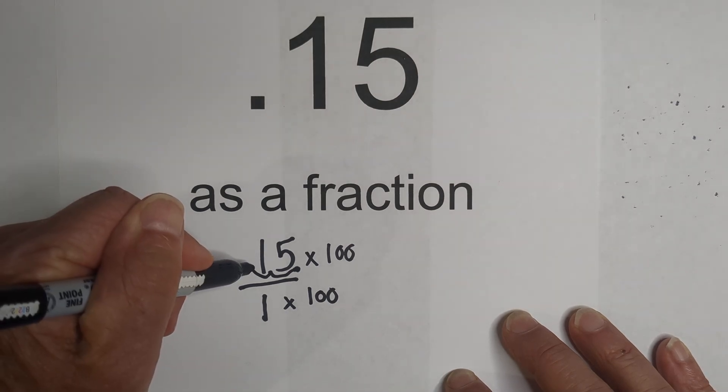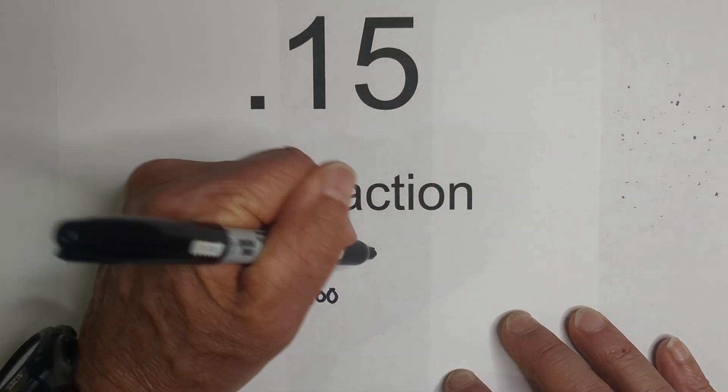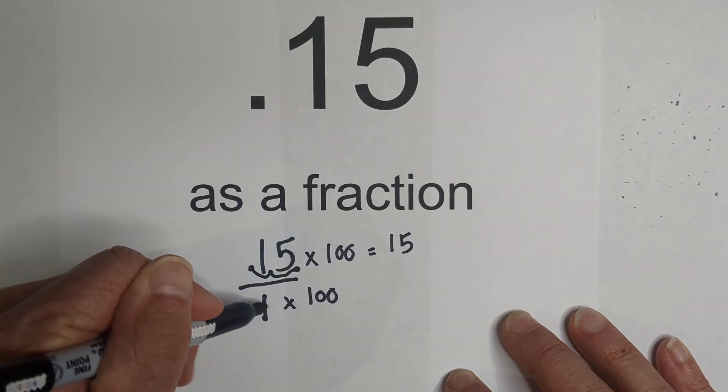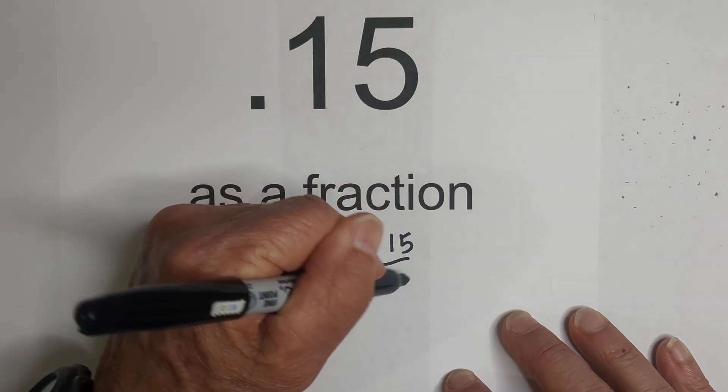So when you do that, you move the decimal two places and that equals 15, and then 1 times 100 is 100.